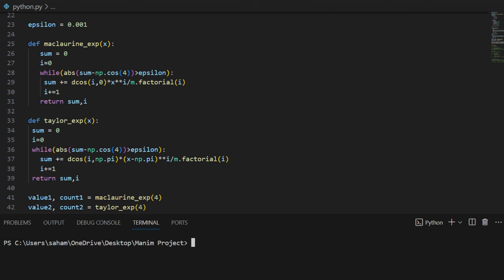Both functions continue the approximation process until the calculated value falls below a predefined threshold, referred to as epsilon. For this scenario, precision to 3 decimal places is desired, hence epsilon is set to 0.001.